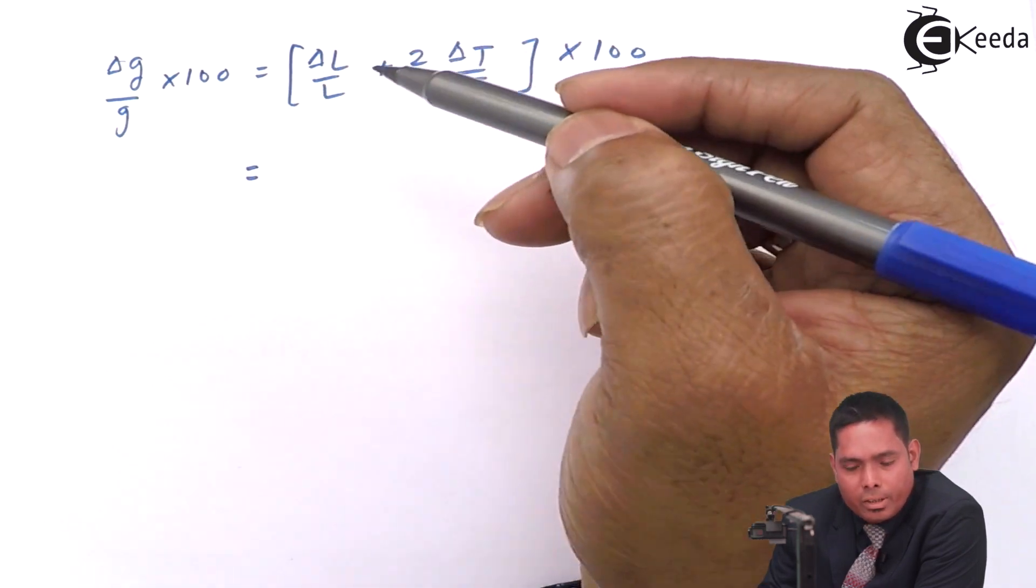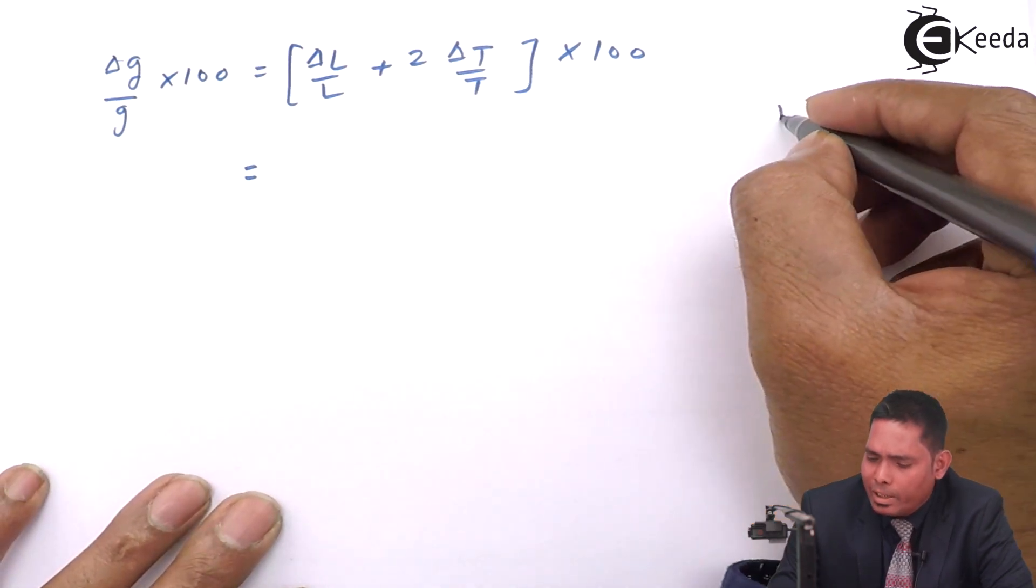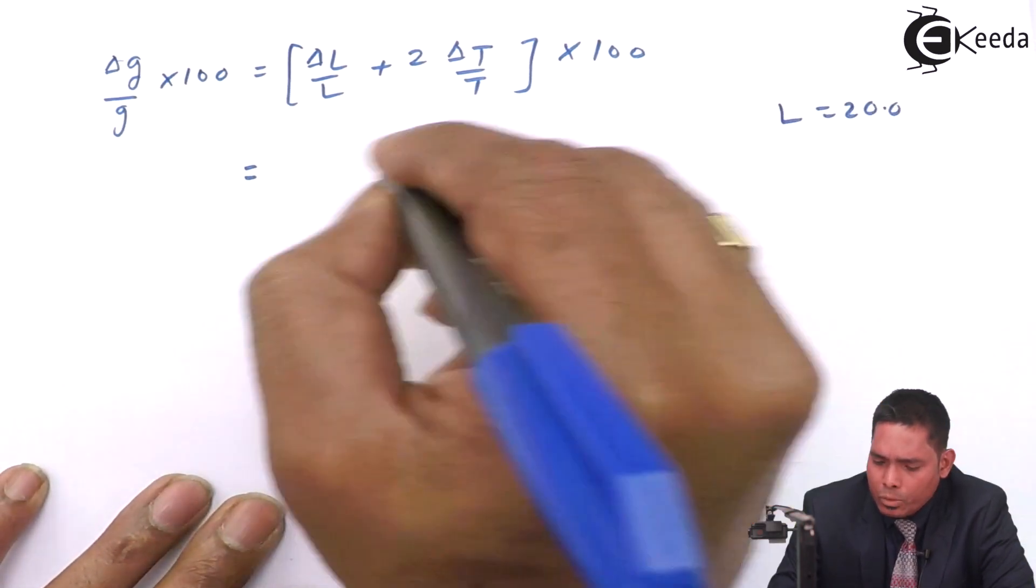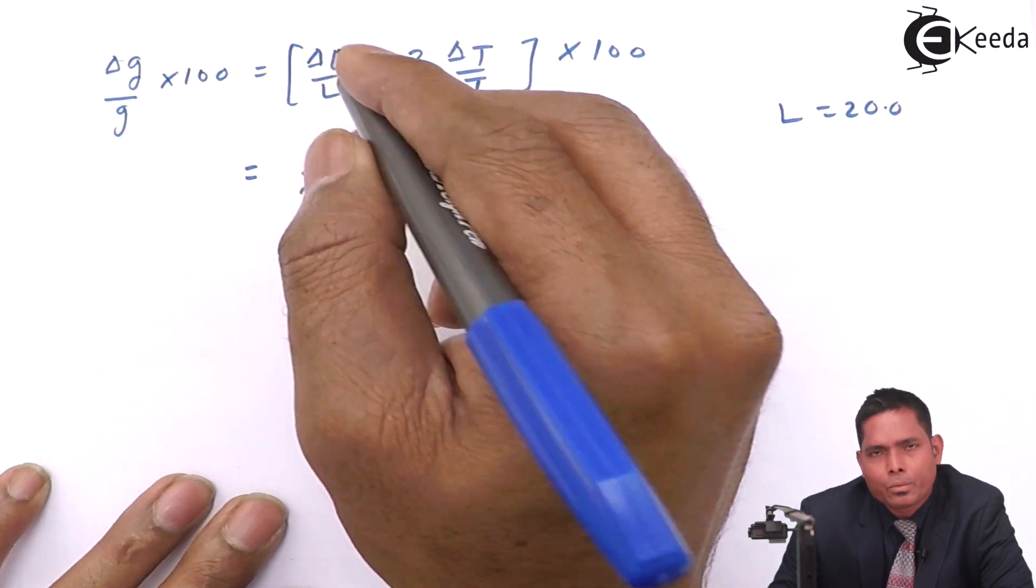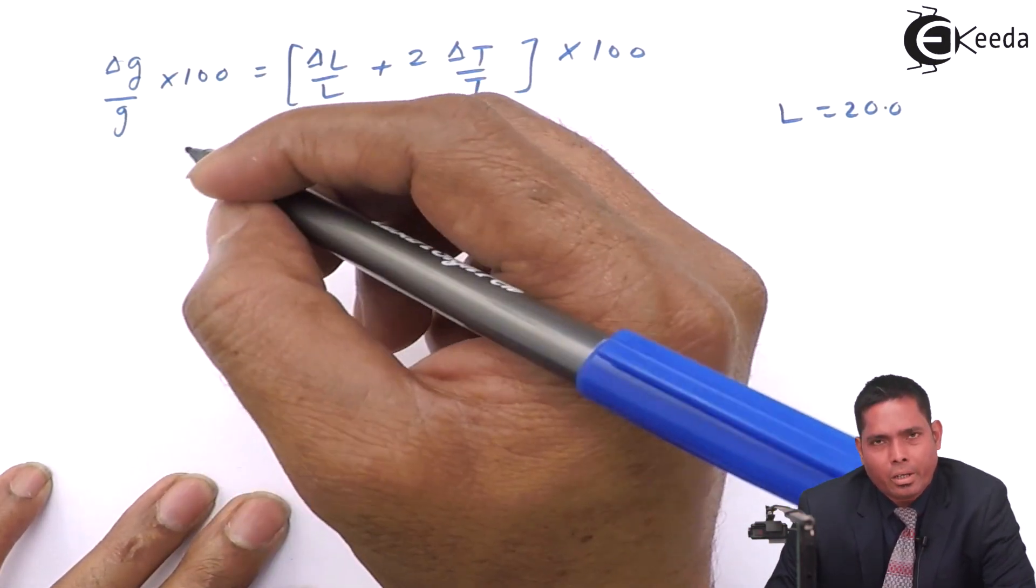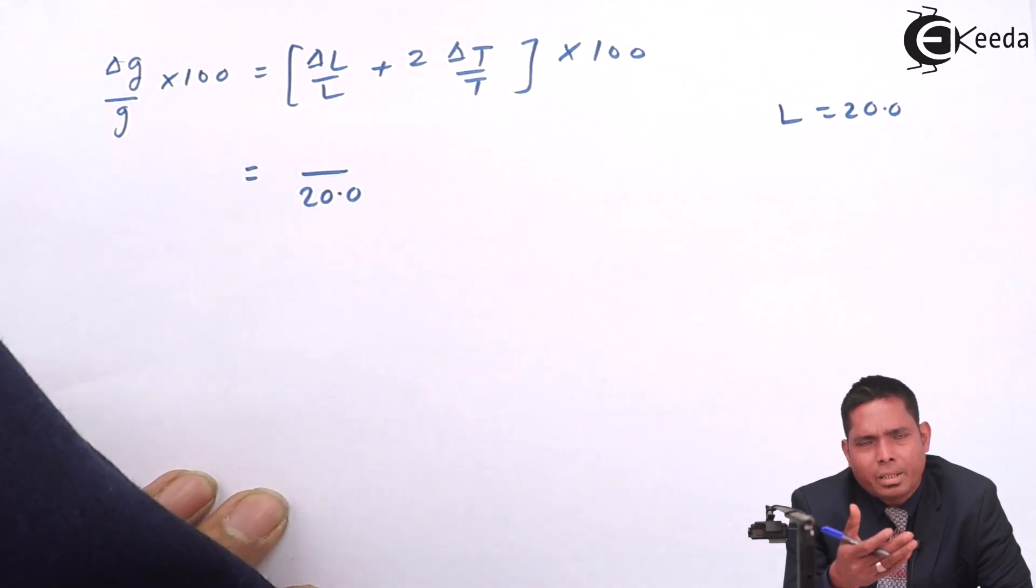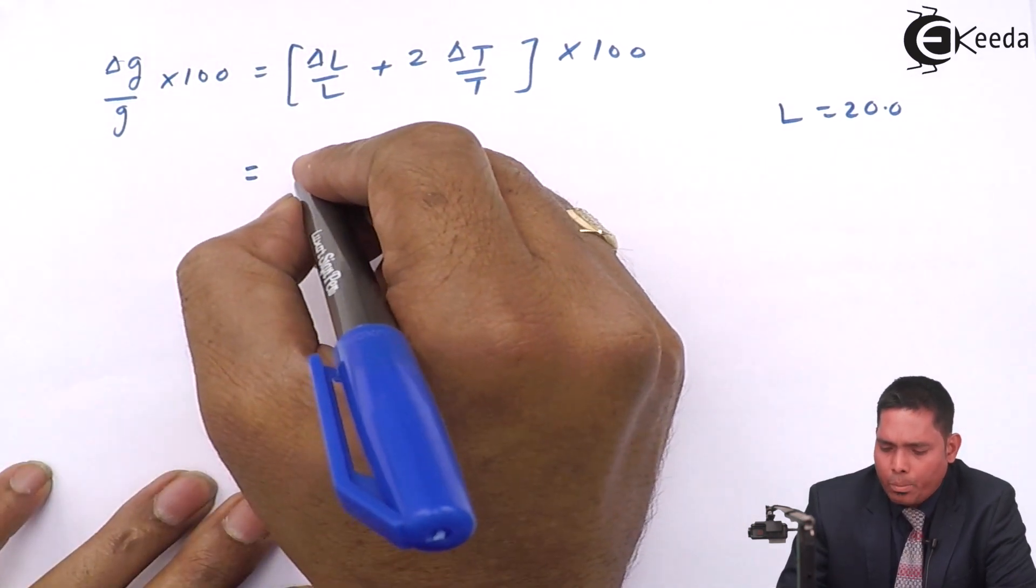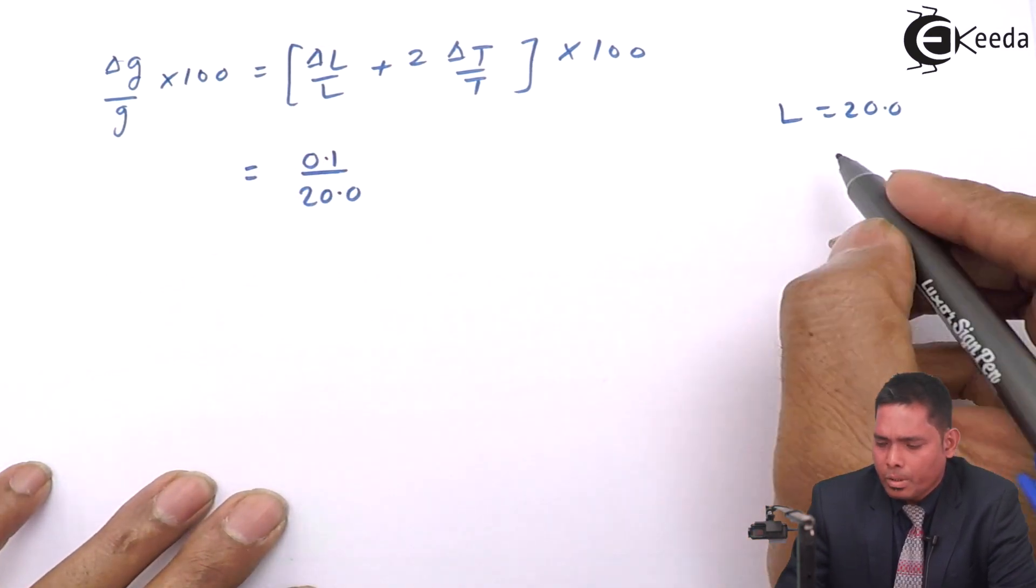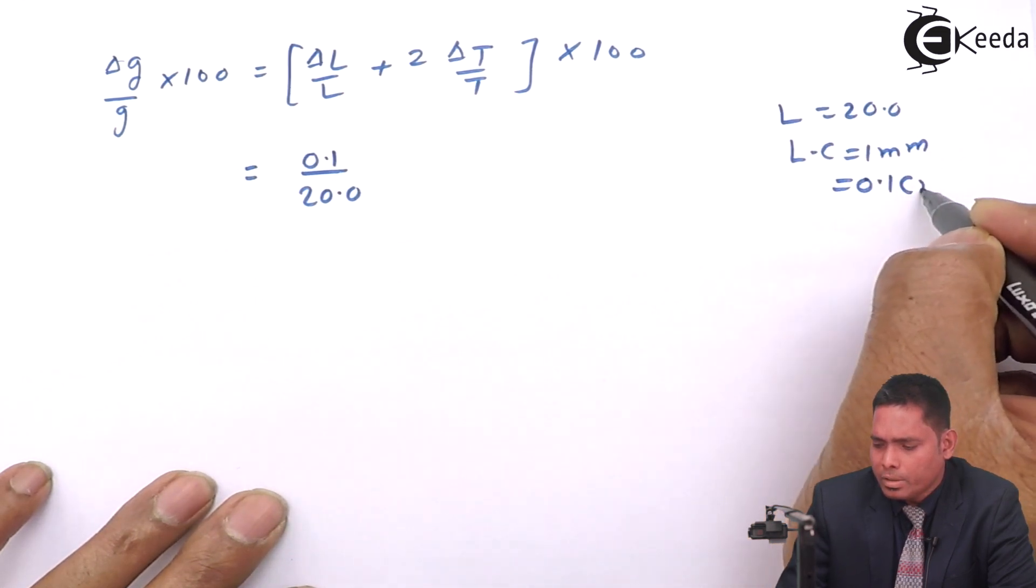Δl—as we have seen, the measured length l is 20.0 centimeters, so therefore this will be 20.0. But what is Δl? The least count, that means the error introduced while you measure 20 centimeter length is the least count, that is one millimeter error is possible. So 1 millimeter is 0.1 centimeter, so the least count given is 1 millimeter which is 0.1 centimeter.